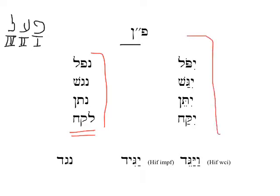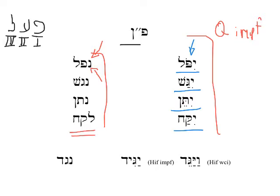Here are some examples of these same words in the kaal imperfect form. We can see that, just as we would expect, there's a competition for the front of the word between the nun and the subject pronoun. The subject pronoun always wins, and the nun assimilates into the middle root letter. So: yipol, he will fall; yigash, he will draw near; yitain, he will give; and yikach, he will take.